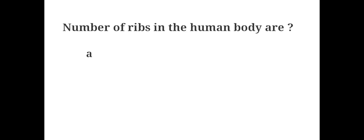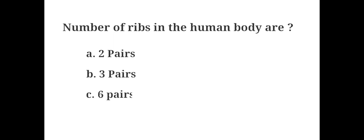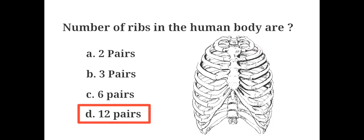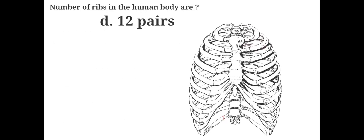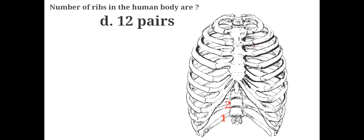Number of ribs in the human body are: A. Two pairs, B. Five pairs, C. Six pairs, D. Twelve pairs. The answer is D. Twelve pairs. In the human body there are twelve pairs of ribs.